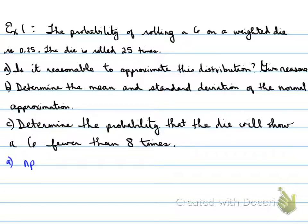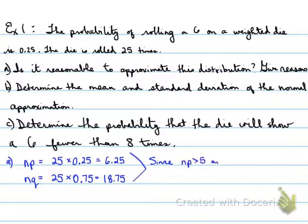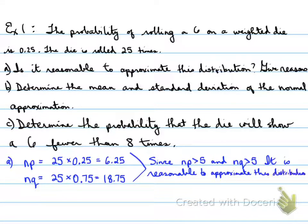For Part A, n times p has to be greater than 5. Taking n = 25 times the probability of 0.25, we get 6.25. Then n times q: 25 times 0.75 gives 18.75. Both of these values are greater than 5, so since np > 5 and nq > 5, it is reasonable to approximate this distribution with a normal distribution.